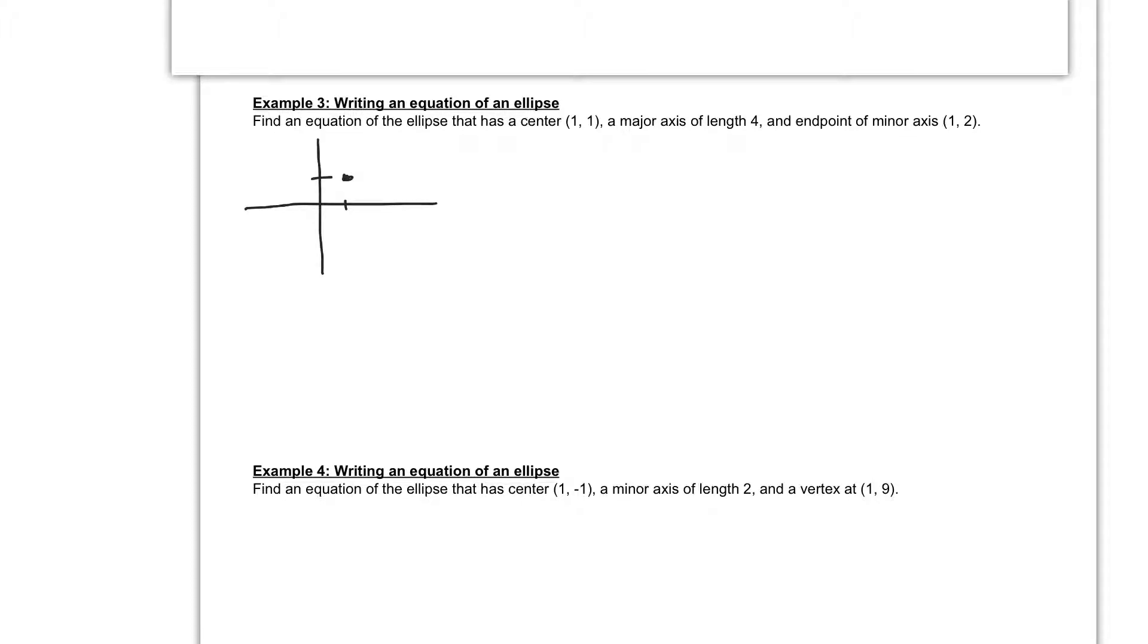And then I'm going to go ahead and graph the endpoint of my minor axis, so I'm going to label this as C. The endpoint of my minor axis is the point (1,2), which is right here. So this is minor.